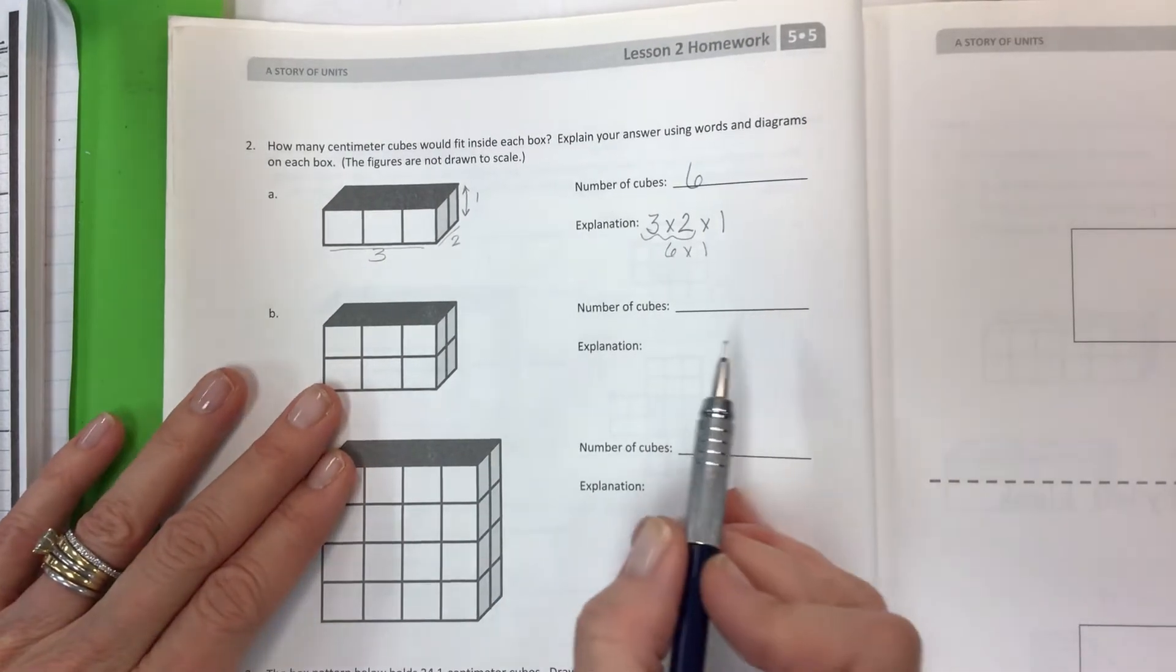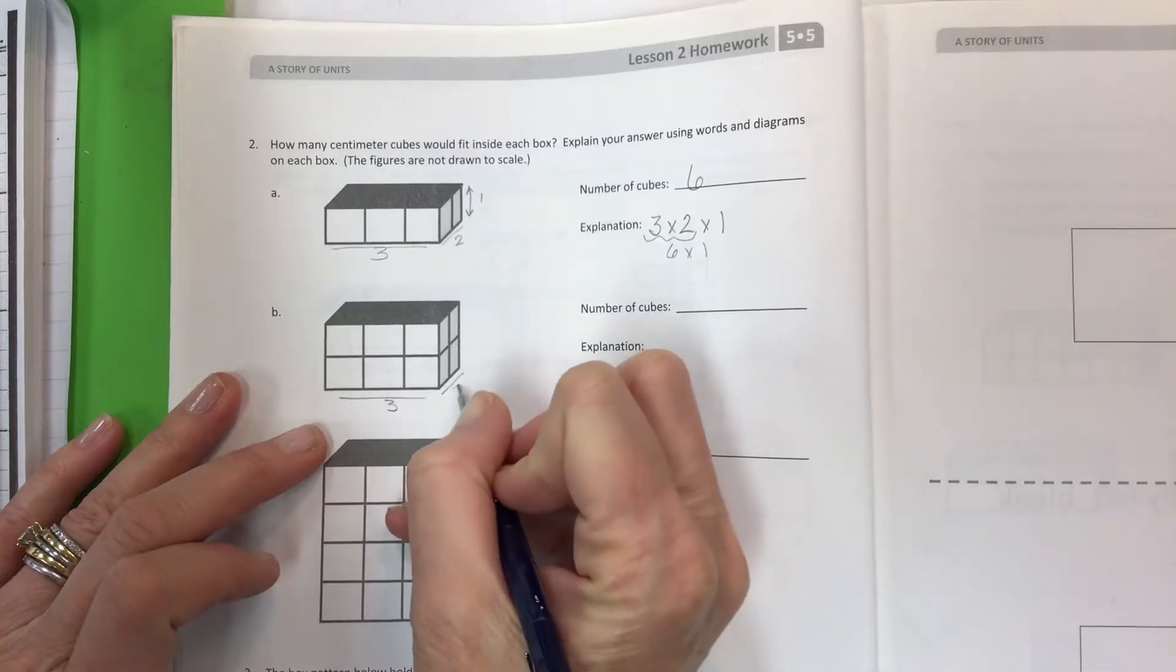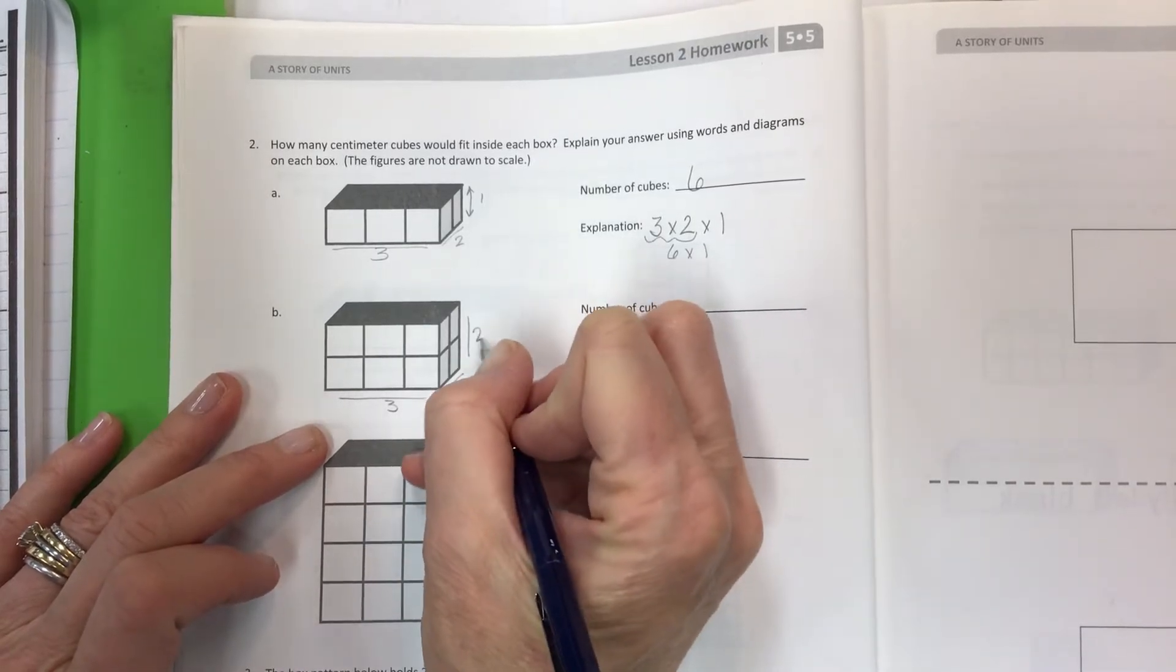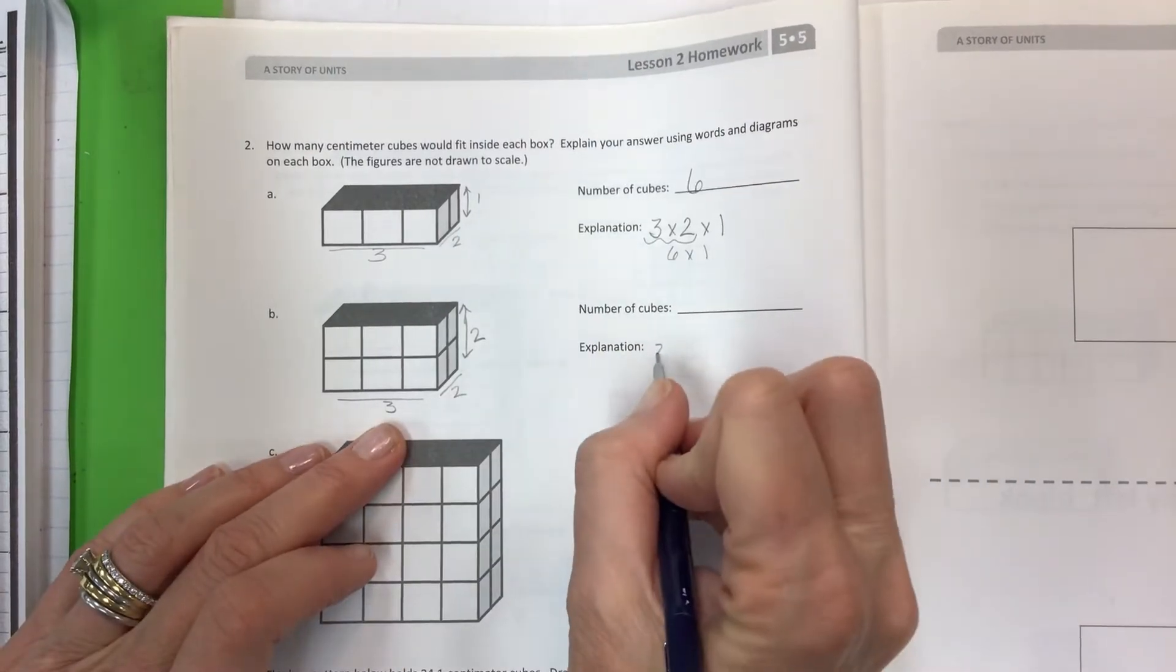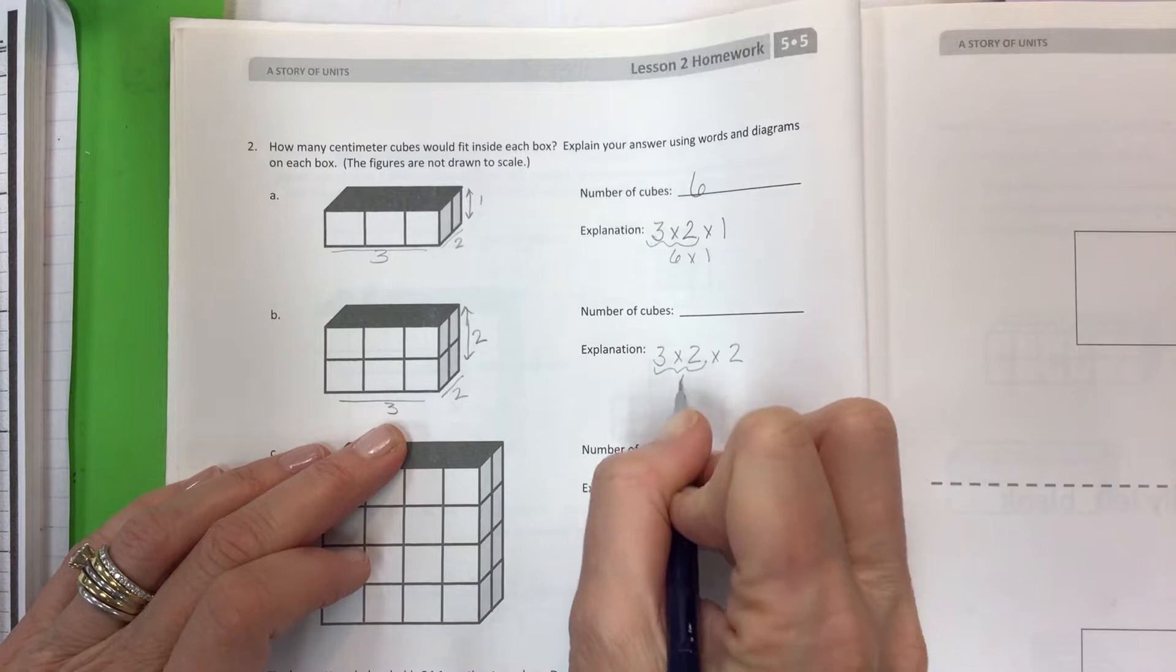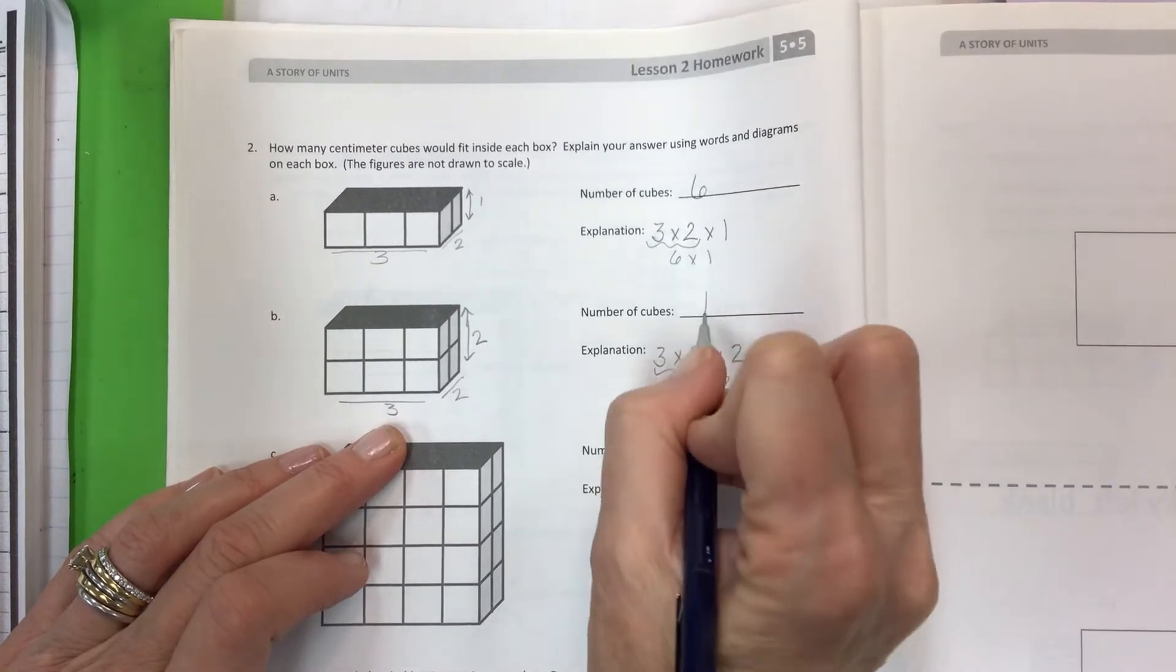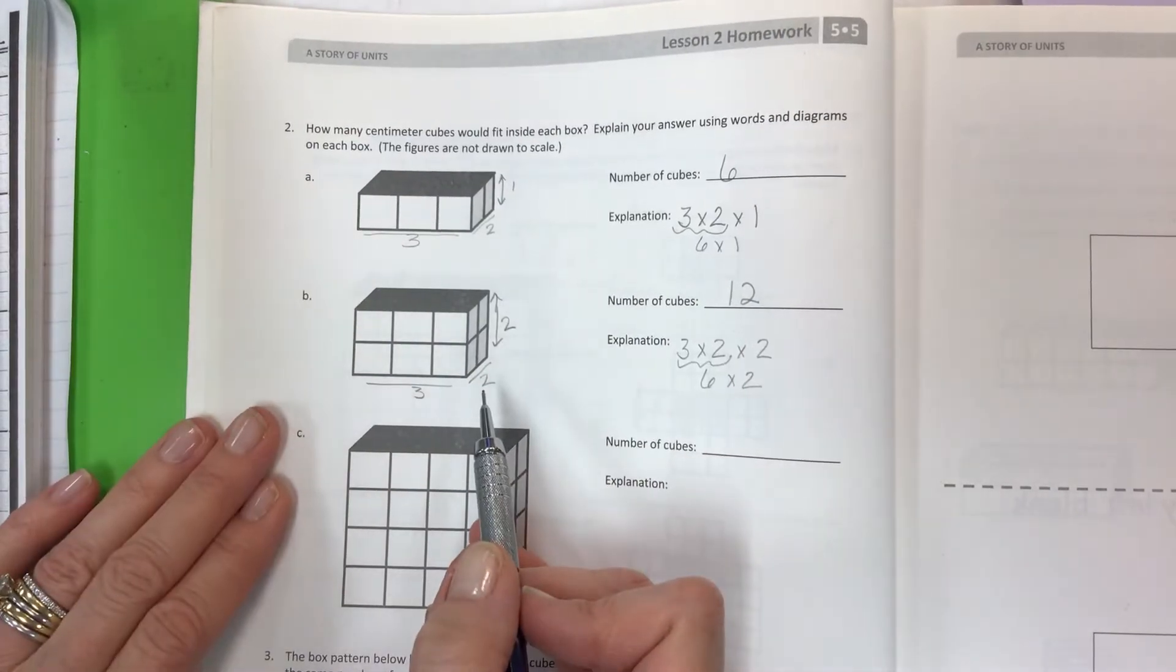If I have 3 by 2 here but the height has changed to 2, then I have my 3 by 2, which I know is 6, but now I'm going to multiply it by 2 and have 12. The only thing we did between A and B was we added a second layer.